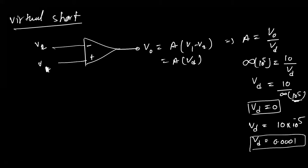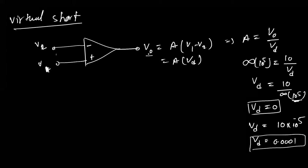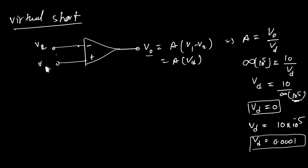Since the gain of an operational amplifier is very high, the difference voltage between the two terminals is nearly zero. Even though both terminals are separate from each other, their voltage difference is approximately zero. This means V1 and V2 must be approximately equal — ideally exactly equal. This concept is called the virtual short concept: virtually short means not actually shorted, but both voltages are the same.